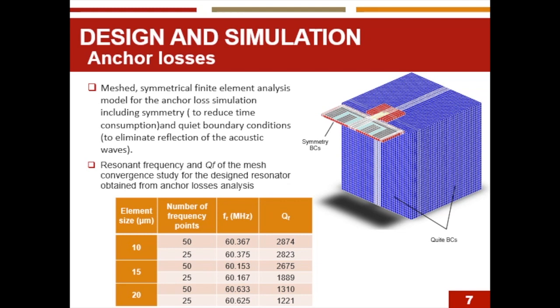Of course, to reach this mesh size, a resonant frequency and quality factor mesh convergence study was done for the design of the resonator obtained from anchor losses analysis. So different meshed element sizes 10, 15, and 20, and we figured out that the mesh element size 10 with 50 number of frequency points was the best choice to achieve resonant frequency of 60.367 megahertz with the acceptable quality factor of 2874.